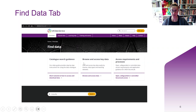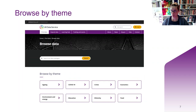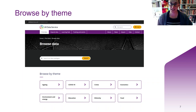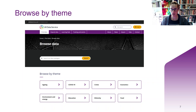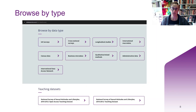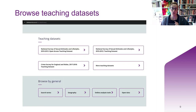Browse and access key data. Theme is the first browsing option presented to you. Inequality is not a theme in its own right, but some of the themes are clearly relevant, such as economics, education, or ethnicity. There are more themes if you scroll down, and you can also browse by data type. If you keep scrolling down even more, you can browse by teaching datasets and a few other categories grouped under general. Geography might be quite interesting if you're looking at inequalities in terms of geographic distribution.